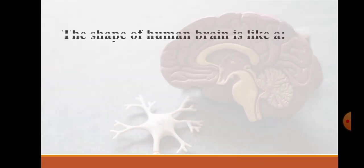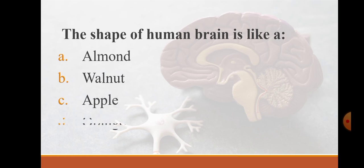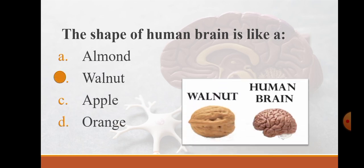The shape of human brain is like a almond, walnut, apple, or orange. The correct answer is walnut. In this diagram you can clearly see that the shape of human brain is like walnut. Like walnut it has 2 ventricles.